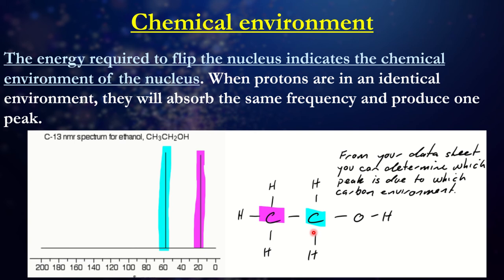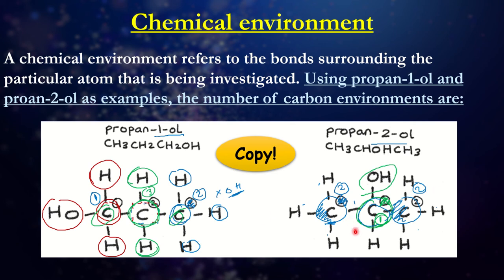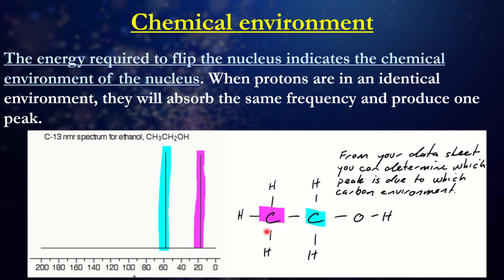The energy required to flip a nucleus will indicate the chemical environment of that nucleus. On an actual spectrum, the number of environments corresponds to the number of peaks expected. For propan-1-ol that's three peaks; for propan-2-ol we expect two peaks. Using ethanol as an example — it has two unique environments — and so we see two unique peaks on its spectrum.